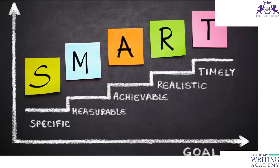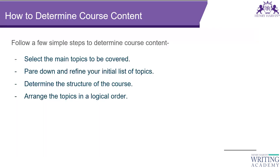The question is how to determine the course content. Select the main topics first, then pare down and refine your initial list of topics — first make a note of everything. Then determine the structure of the course: how much you want as theory, how much as practical, and arrange the topics in a logical order, which is very important.